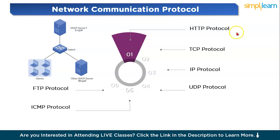The next protocol is TCP — Transmission Control Protocol. TCP is a reliable, connection-oriented protocol that ensures data packets are delivered accurately and in sequence. It is widely used for applications requiring stable data transmission, such as web browsing, email, and file transfer. TCP establishes a connection using a three-way handshake: SYN, SYN-ACK, and ACK. It breaks data into packets and numbers them for proper reassembly.